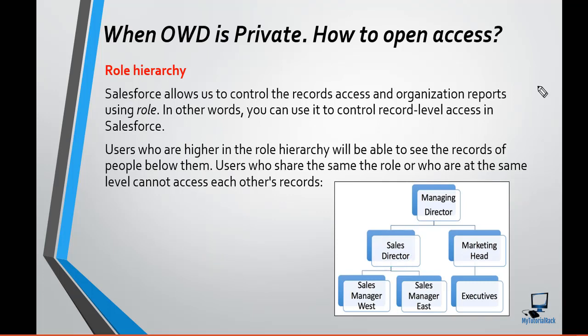In this case, the sales director will be able to access the records created by sales manager west and sales manager east because he is above in the role hierarchy. Similarly, the marketing head will be able to access the records created by the executives because he is above in the role hierarchy. And the managing director will be able to access the records accessible by both the sales director and the marketing head, because the managing director is way above in the role hierarchy.